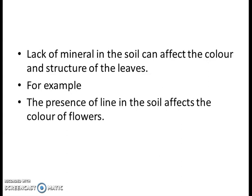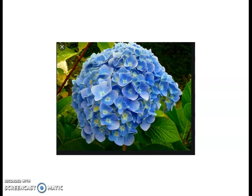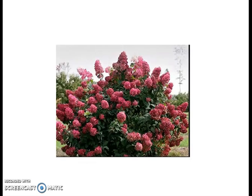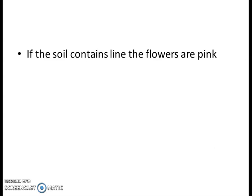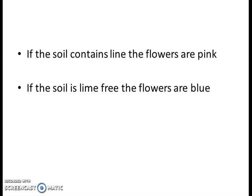The presence of lime in the soil affects the color of flowers. As you can see here, one of these flowers is blue in color, while the same type of flower belonging to the same category has a pink color. This difference arises from the different amount of mineral in the soil. If the soil contains lime, the flowers are pink. If the soil is lime-free, the flowers will be blue.